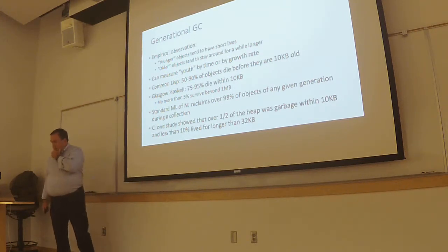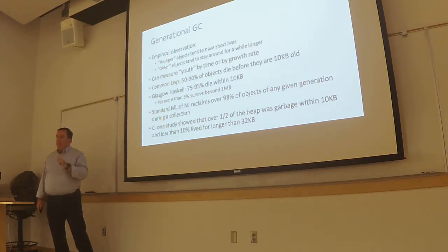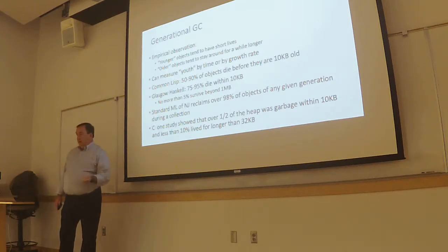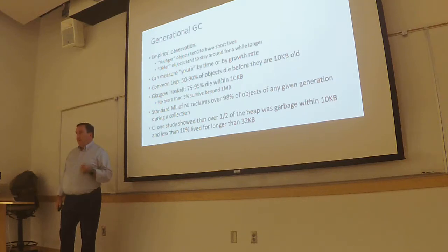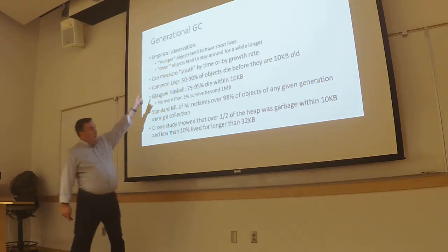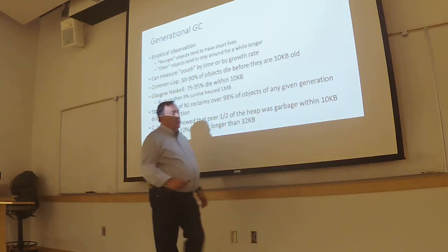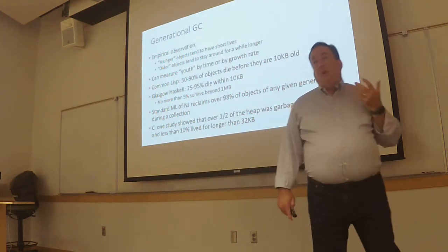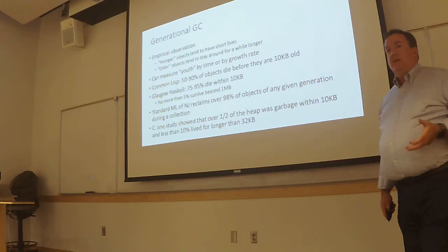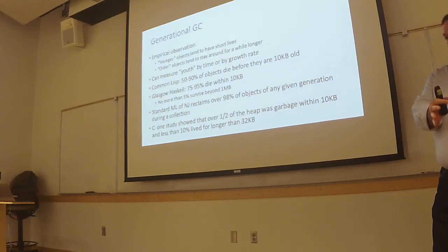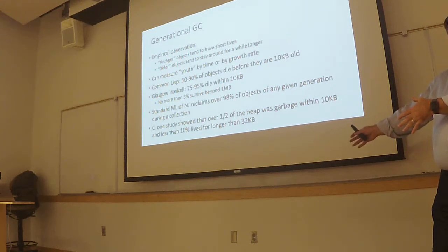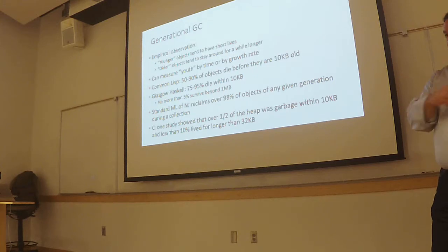So let's actually exploit this idea. One way we can identify that something is likely to continue to be around for a while — and therefore avoid continuing to copy it — is to look at how long it's already been around. It's not a perfect predictor, but it's not bad; the odds are in our favor. This introduces the idea of what's called a generational collector, where we sort out young objects and old objects. Younger ones we collect more frequently, older ones less frequently.